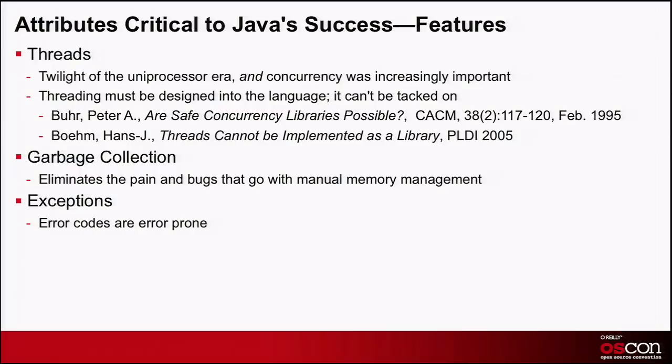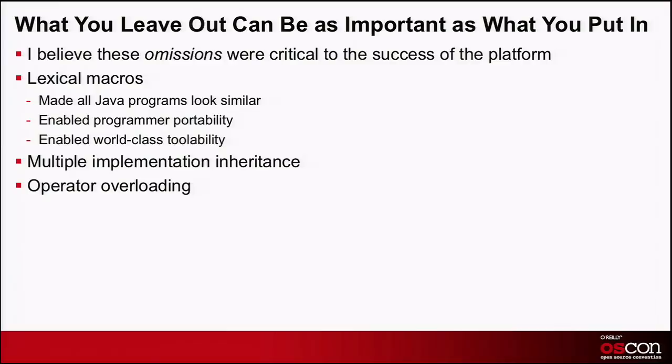It turns out that what you leave out can be as important as what you put in. James left out a bunch of things that had been assumed critical. Exhibit A is lexical macros. If you look at a C program, it's all about macros, but macros have problems — especially lexical macros like C's. That decision turned out to be a great one: it makes all Java programs somewhat similar to one another, enables programmer portability, and is important for toolability. Once you have macros, it's really hard to do auto-completion.